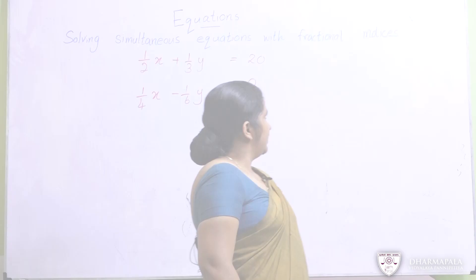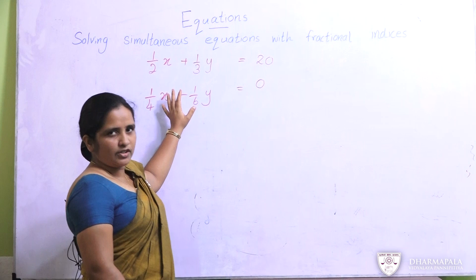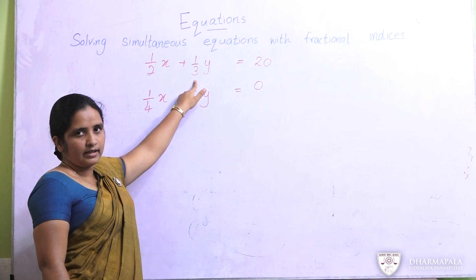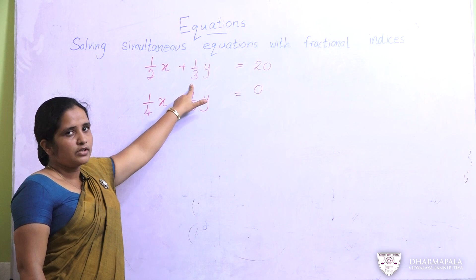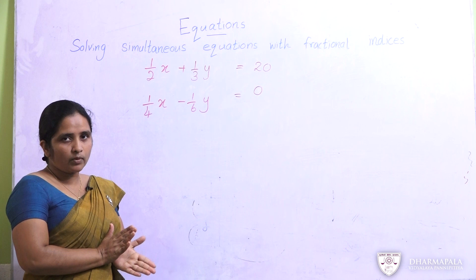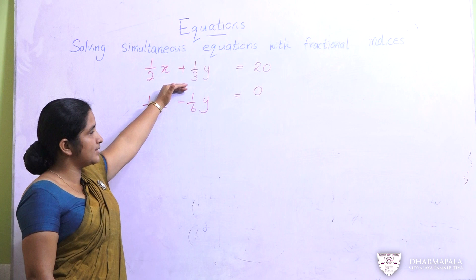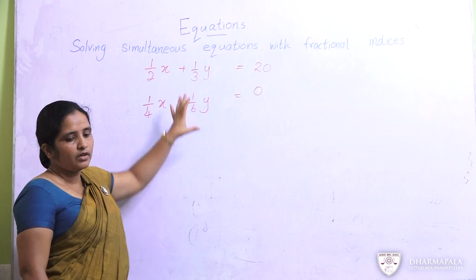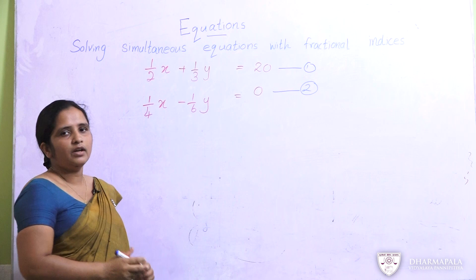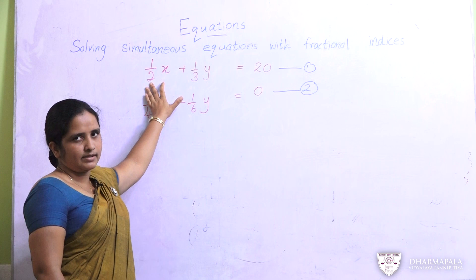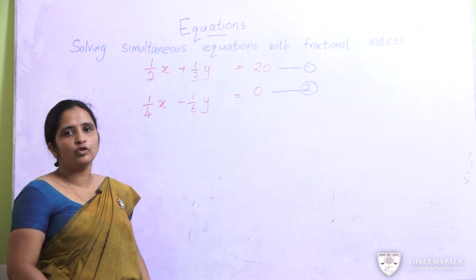In these equations we have fractional coefficients. Here the coefficient of x is one half, and the coefficient of y is one over three. So before, we did not solve equations like this. Now we are going to solve simultaneous equations with fractions as coefficients. First we have to name these two equations — we will put 1 here and 2 for this equation.